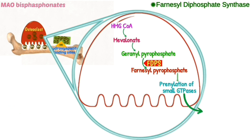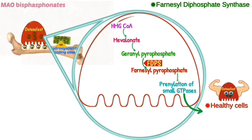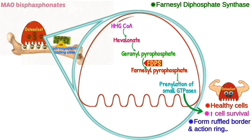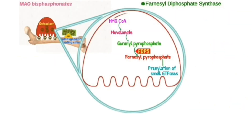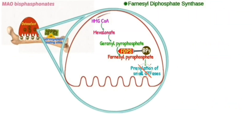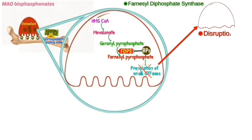Farnesyl pyrophosphate leads to prenylation of small GTPases, which causes healthy cells with increased cell survival, forming the ruffled border and actin ring, increasing bone resorption. When bisphosphonate inhibits the FDPS enzyme, prenylation of small GTPases will not take place, causing disruption of the ruffled border.